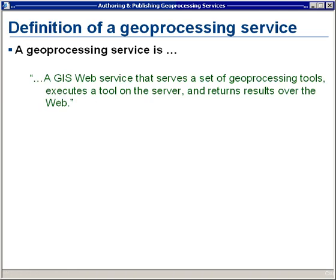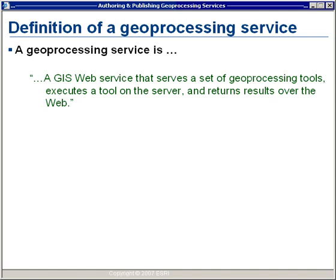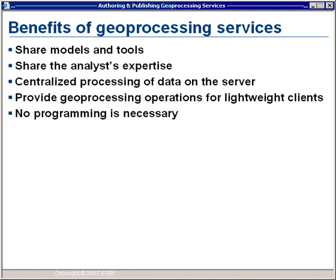A geoprocessing service is a GIS web service that serves a set of geoprocessing tools, executes a tool on the server, and returns results over the web. ArcGIS Server geoprocessing services allow you to take a process that might have once been done manually, automate it using a model in Model Builder or a Python script, and make it available to others as a service. When the user makes use of the service, it executes not on the user's machine but on the server hosting the service, and the results are then passed back to the user.